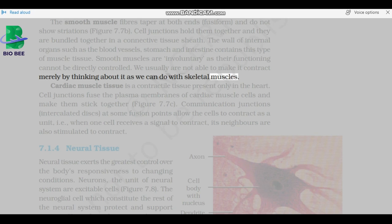Cardiac muscle tissue is a contractile tissue present only in the heart. Cell junctions fuse the plasma membranes of cardiac muscle cells and make them stick together. Communication junctions, intercalated discs, at some fusion points allow the cells to contract as a unit, i.e., when one cell receives a signal to contract, its neighbors are also stimulated to contract.